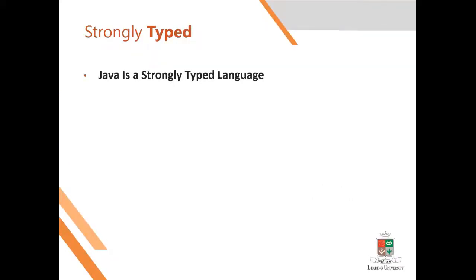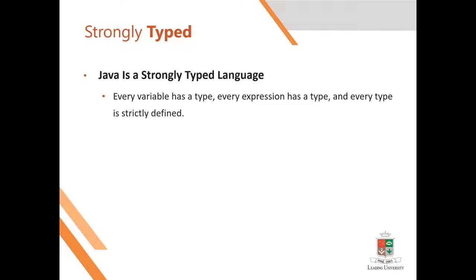First, we start with the statement that Java is a strongly typed language. Every variable has a data type and every expression has a type. So we need to know the value that a variable will hold — we need to know the name of the variable and the expression, including the variable method.